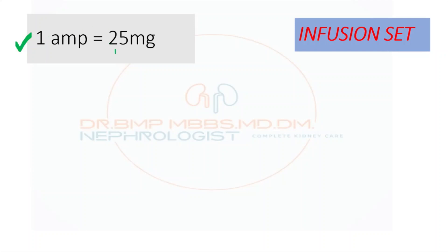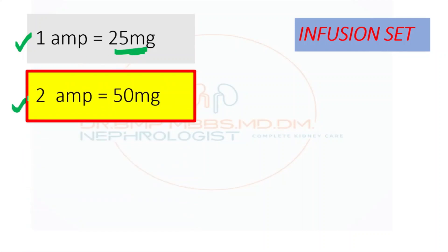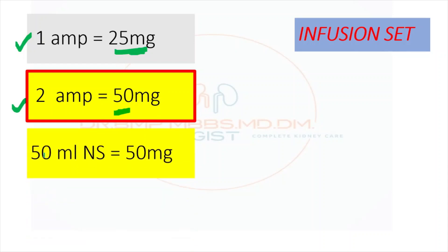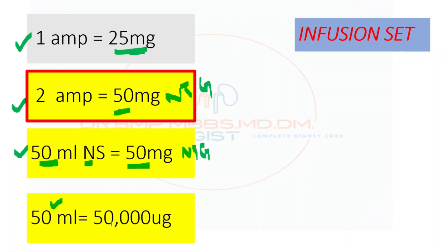One ampule contains 5 mg, so one ampule contains 25 mg. If we take two ampules, that gives 50 mg of nitroglycerin. Putting two ampules into 50 ml of normal saline in the infusion pump means 50 ml of NS contains 50 mg of NTG, which equals 50,000 micrograms. So 1 ml of NS in that infusion contains 1,000 micrograms.